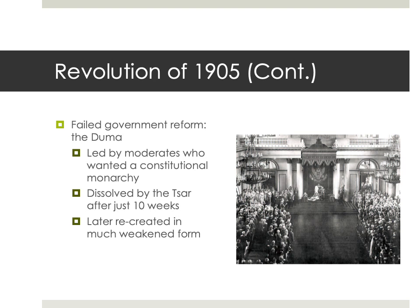He would later recreate the Duma in a very weakened form — basically a rubber stamp parliament that would just sign off on whatever he had decided. It did exist in some form but really played no major role, at least until the actual revolution of 1917 really got going. The key with this Revolution of 1905 is that it really foreshadowed 1917 — it was kind of a prelude. Discontent from below due to all of these issues and these failures to institute significant, meaningful reform kind of bubbled to the surface. So this very much foreshadowed what was coming in 1917.